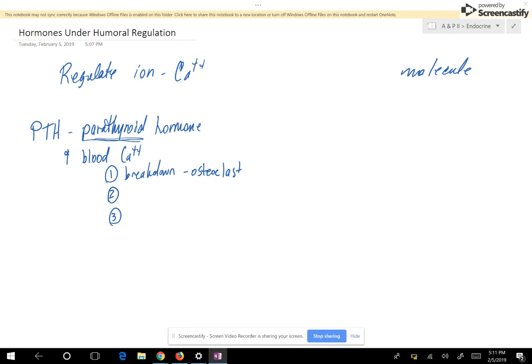Another way is going to increase absorption in the digestive tract. You might remember that vitamin D is needed for the absorption of calcium. So vitamin D will be activated. PTH is going to increase that absorption of calcium. So more of the calcium goes into the bloodstream instead of staying in the small intestine and in the large intestines and carried out of the body.